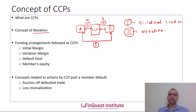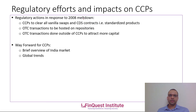If the trade doesn't get auctioned off, the CCP applies loss mutualization — consuming the default fund contributions of non-defaulting members. These techniques allow the CCP to handle member defaults and contain any systemic risk generated by those defaults.